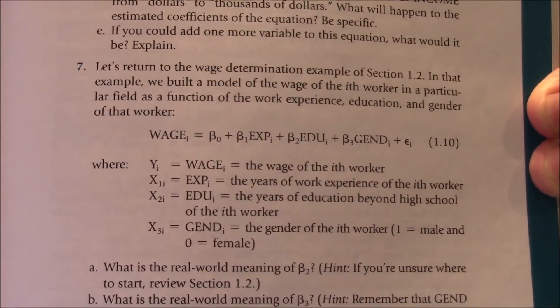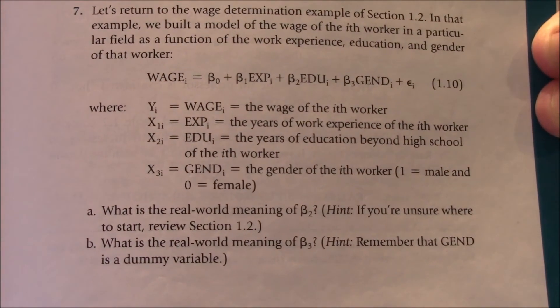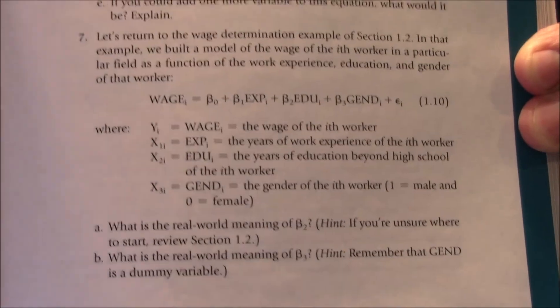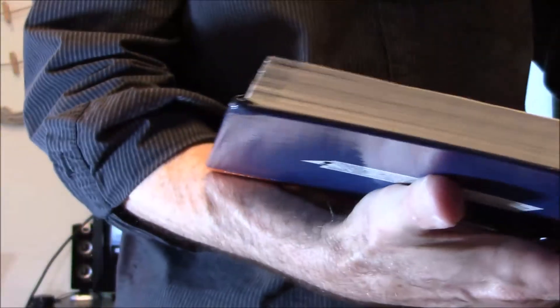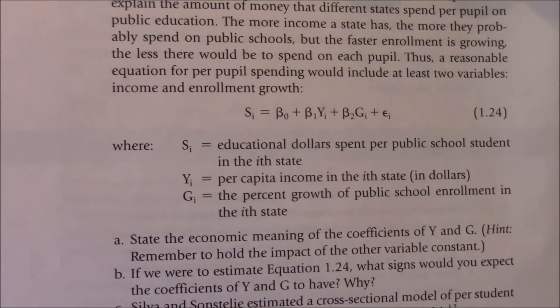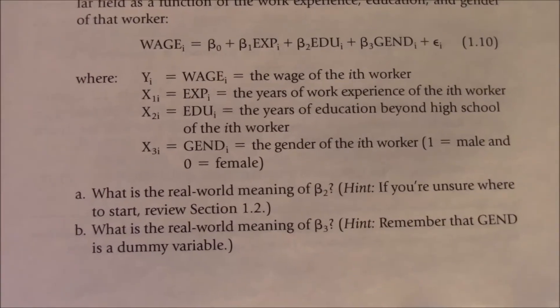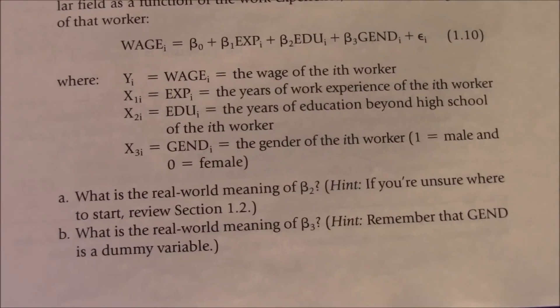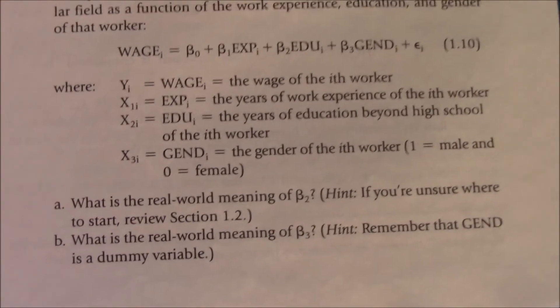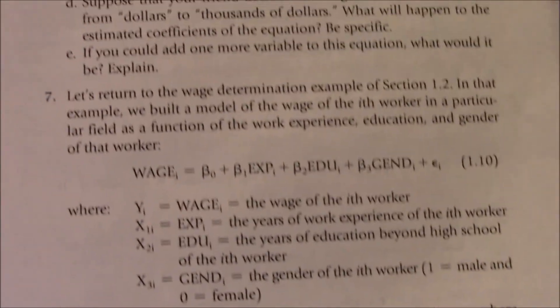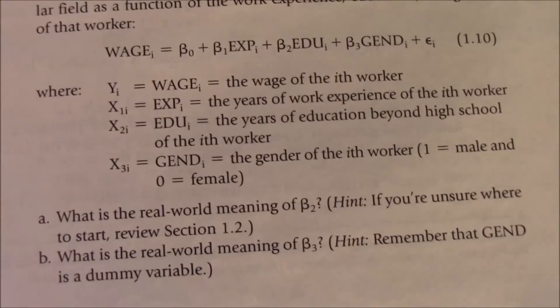On number seven we have a regression here on wage as a function of experience, education, and gender. And it's going to ask you what is beta sub 2, and you're just doing the exact same thing you just did. You're basically going through once again and describing in very specific terms the impact of beta sub 2 and what we get here, education. All right, so the years of it. So for every additional year of education beyond high school the ith worker earns, and then you say in... Now they haven't been specific about how wage is measured, have they? Well that's good for you, that makes it easier.